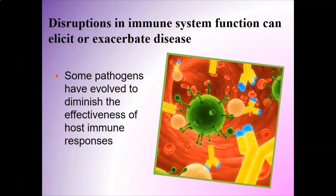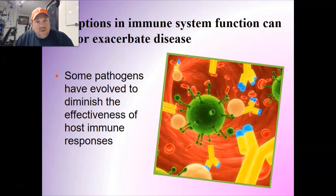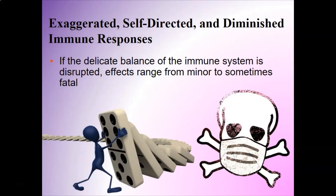Disruptions in immune system function can elicit or exacerbate disease - they can bring about a disease or make it much worse when your immune system isn't working correctly. Some pathogens have evolved to diminish the effectiveness of host immune responses. It's an evolutionary arms race: your immune system has been evolving for millions of years to fight pathogens, but pathogens have also been evolving to combat our immune system. Sometimes your immune system is exaggerated or self-directed, sometimes you have diminished responses, and all of these can ruin the delicate balance - causing little problem or proving fatal depending on the disruption.